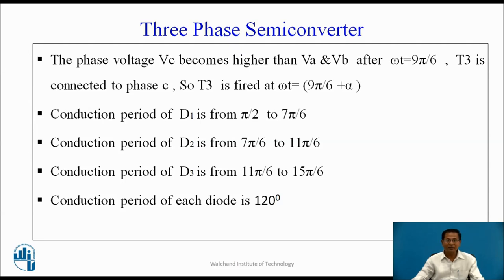The conduction period of D1 is from π/2 to 7π/6. Conduction period of D2 is from 7π/6 to 11π/6. The conduction period of D3 is from 11π/6 to 15π/6. The conduction period of each diode is 120 degrees.